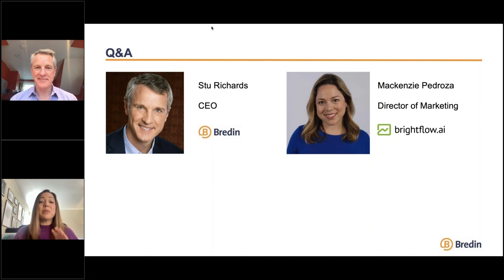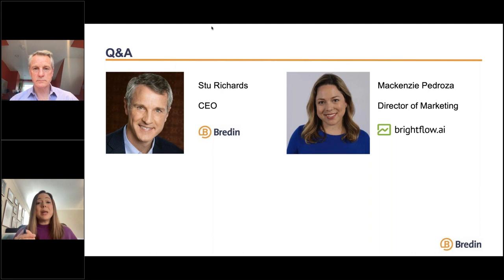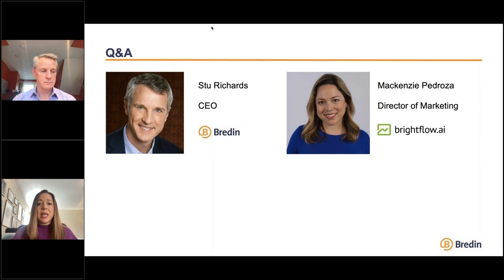I didn't answer your earlier question about how we think about SMBs. Our small to medium-sized businesses at Brightflow AI are really in the range from below $1 million in revenue all the way up to about $40 million in revenue per year. So we have a pretty wide-ranging idea of what a small or medium-sized business could be, and we really try to tailor our insights not to everyone, but to certain elements of each audience.